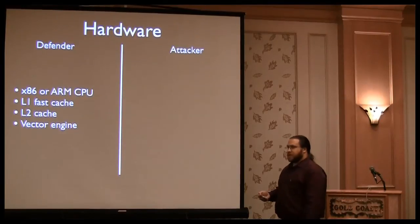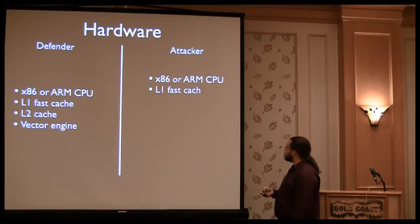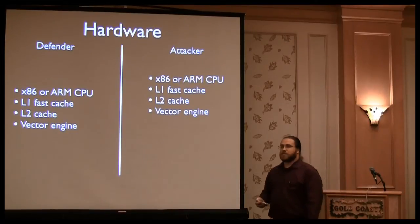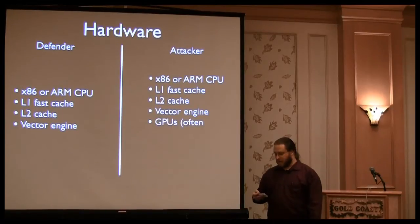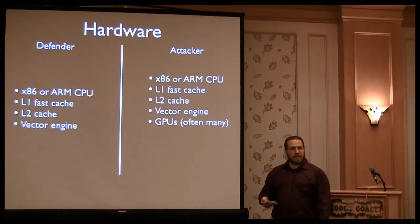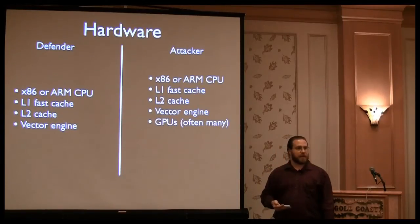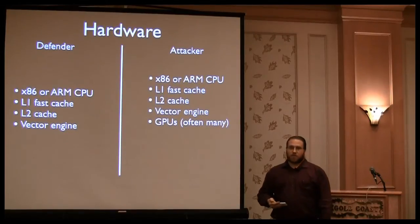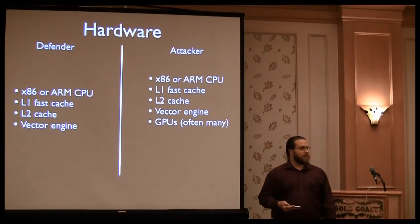The attacker typically has the same hardware available to them, except they get to choose their hardware — so they may have a more advanced vector engine than the defender. It goes downhill from there because attackers nowadays typically have GPUs, and lots of them. It's not uncommon to have an eight-card system, and with VCL and clustering work done lately, 20, 30, 40, or 50 GPUs attacking a single problem is entirely within bounds.